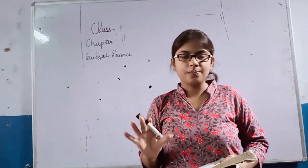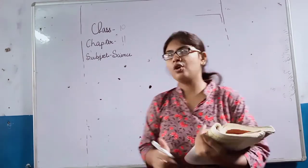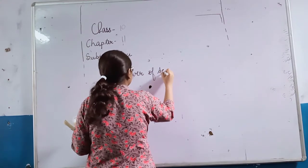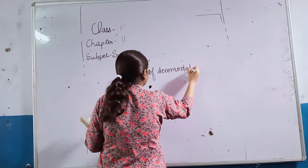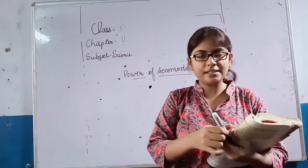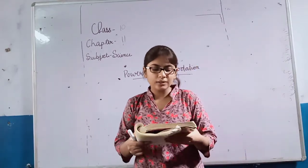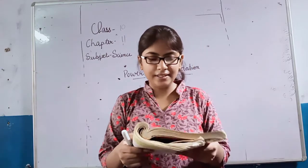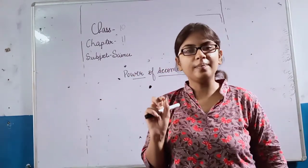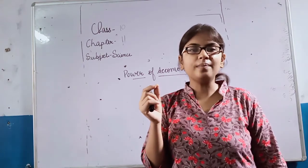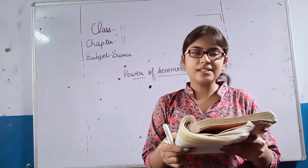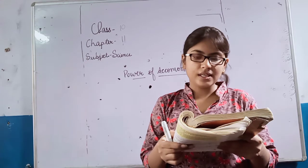What are the functions of these parts? The lens is composed of jelly-like materials. Its curvature can be modified to some extent by the ciliary muscles. The change in the curvature of the lens can thus change its focal length.